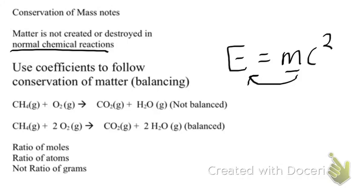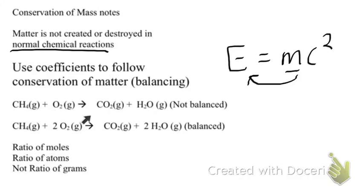The reason this equation is unbalanced is because there are four hydrogens on the reactant side and only two hydrogens on the product side — an irregular number of hydrogens. Likewise, for oxygen, there are two oxygens on the reactant side and three oxygens on the product side. So our oxygens are not balanced either.